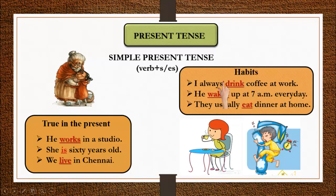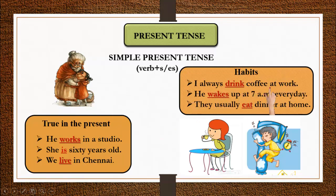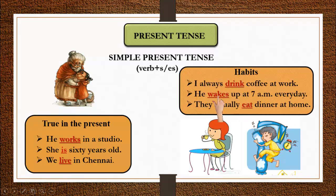The second use of simple present tense is for habits. For example: 'I always drink coffee at night.' 'He wakes up at 7 am every day.' 'They usually eat dinner at home.' These sentences describe habitual actions — things done regularly. So we use simple present tense for habitual actions.